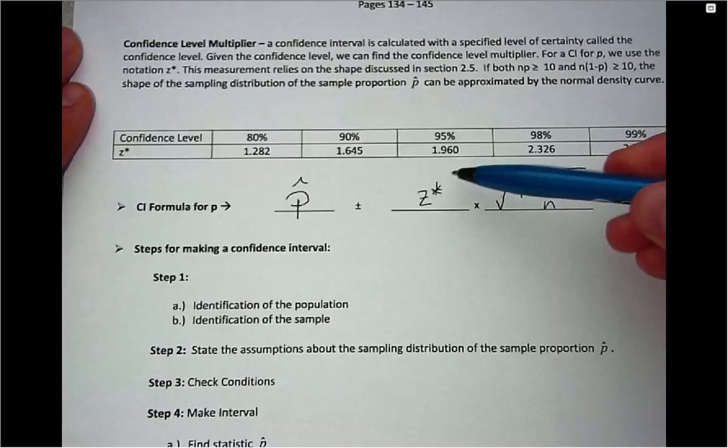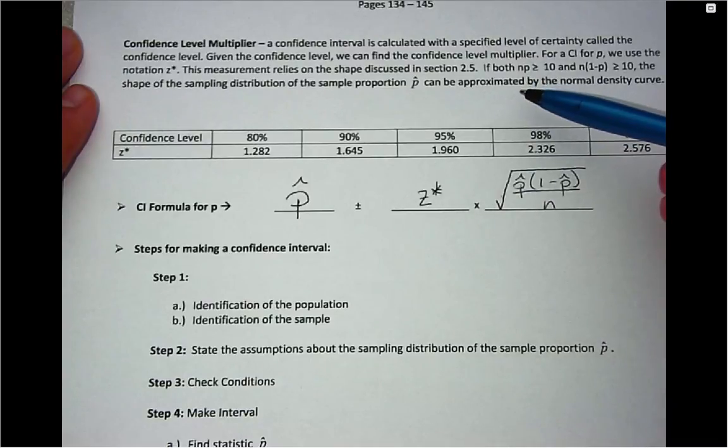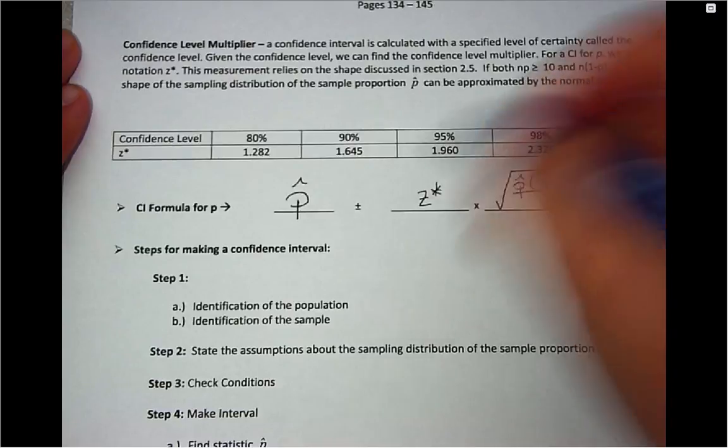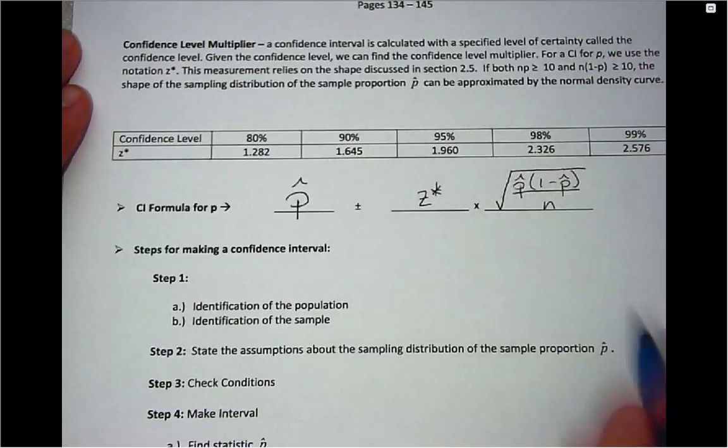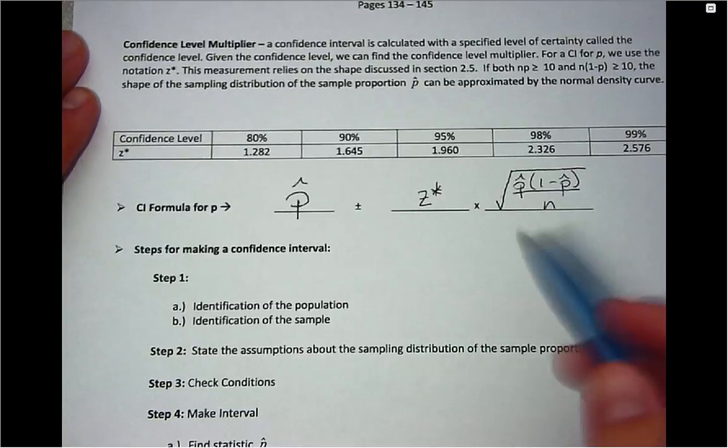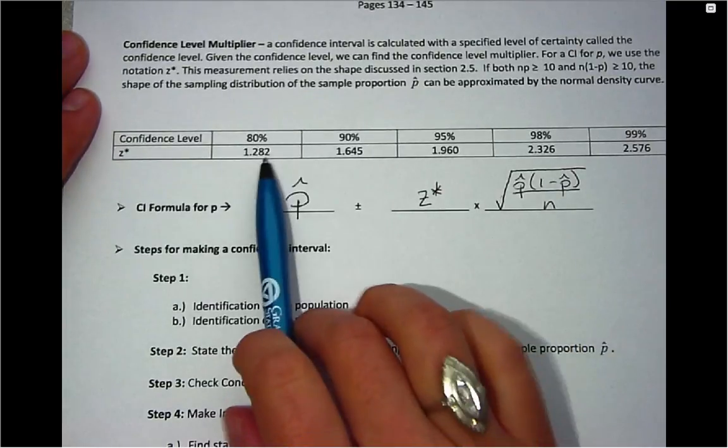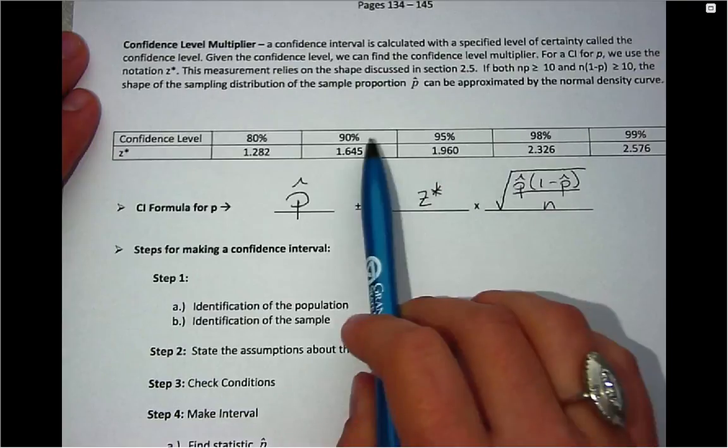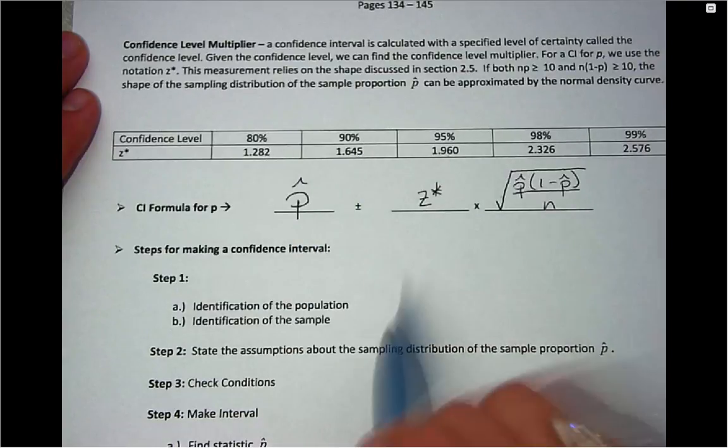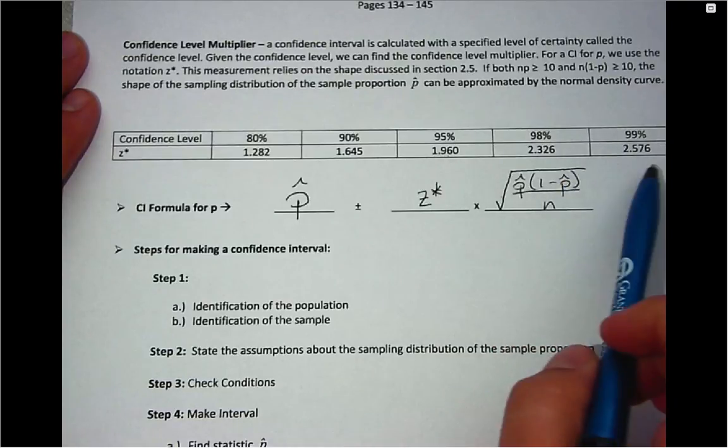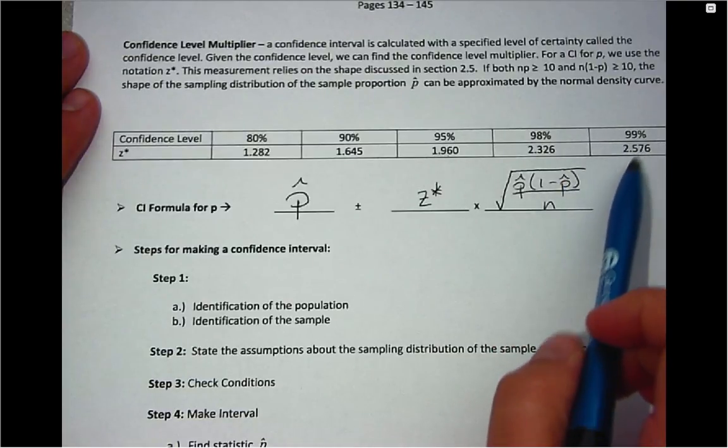Z star is coming from the normal distribution. We talked about in the sampling distribution information that we know it will have that normal distribution if n times p and n times 1 minus p are both greater than 10. So within that normal distribution, we know the cutoff points or the multipliers that will contain 99%, 98%, 95%, 90%, and 80% of data. If I ask you to calculate a 99% confidence interval, you would use this as your multiplier.